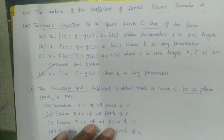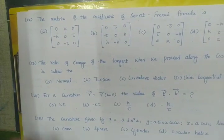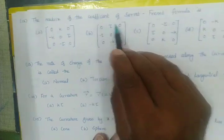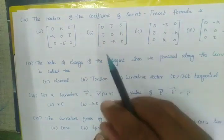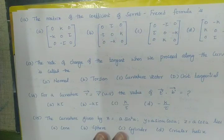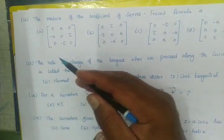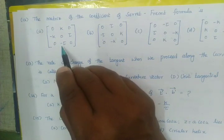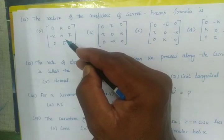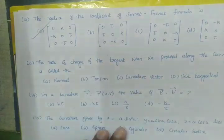The matrix of coefficients of the Serret-Frenet formula is given with entries involving K and τ: the matrix has K, 0; −K, 0; τ and −τ entries. Option A is the right option — the first matrix is the matrix of coefficients for the Serret-Frenet formula.